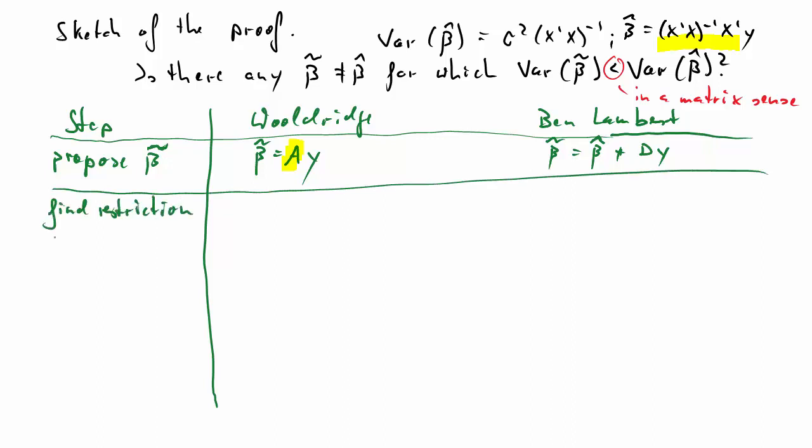First, we need to find the restriction which results from imposing that we are only interested in unbiased estimators. And in Wooldridge, we find that this restriction is that a prime x is equal to the identity matrix. And in Ben Lambert, that restriction is that dx is equal to 0.